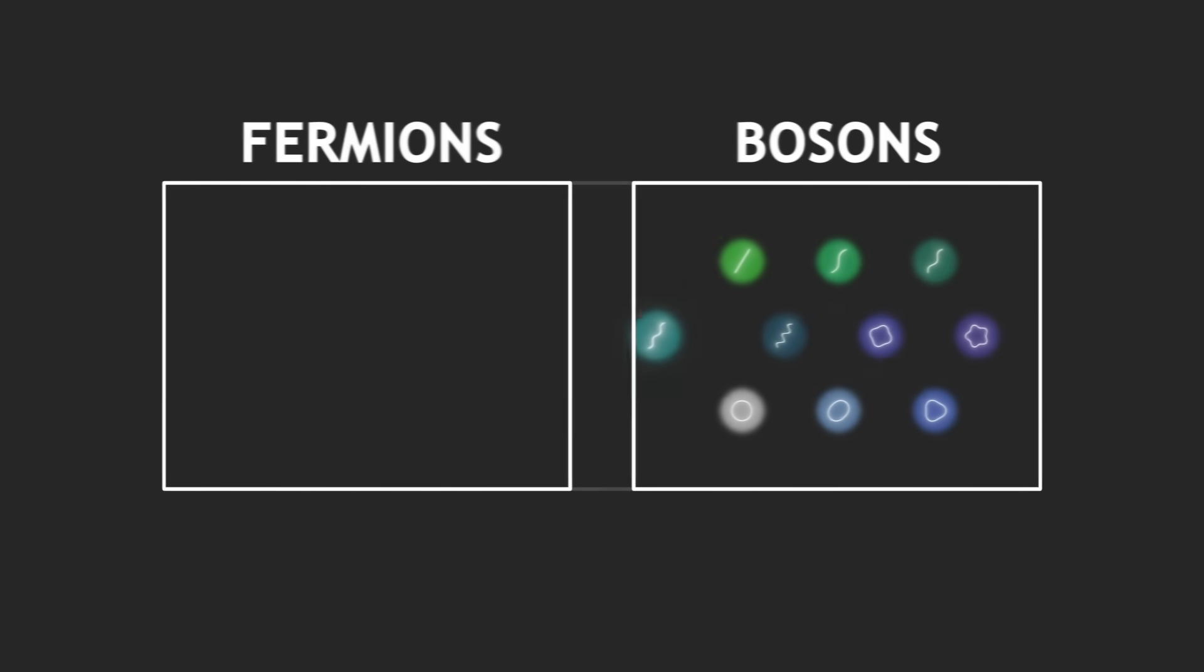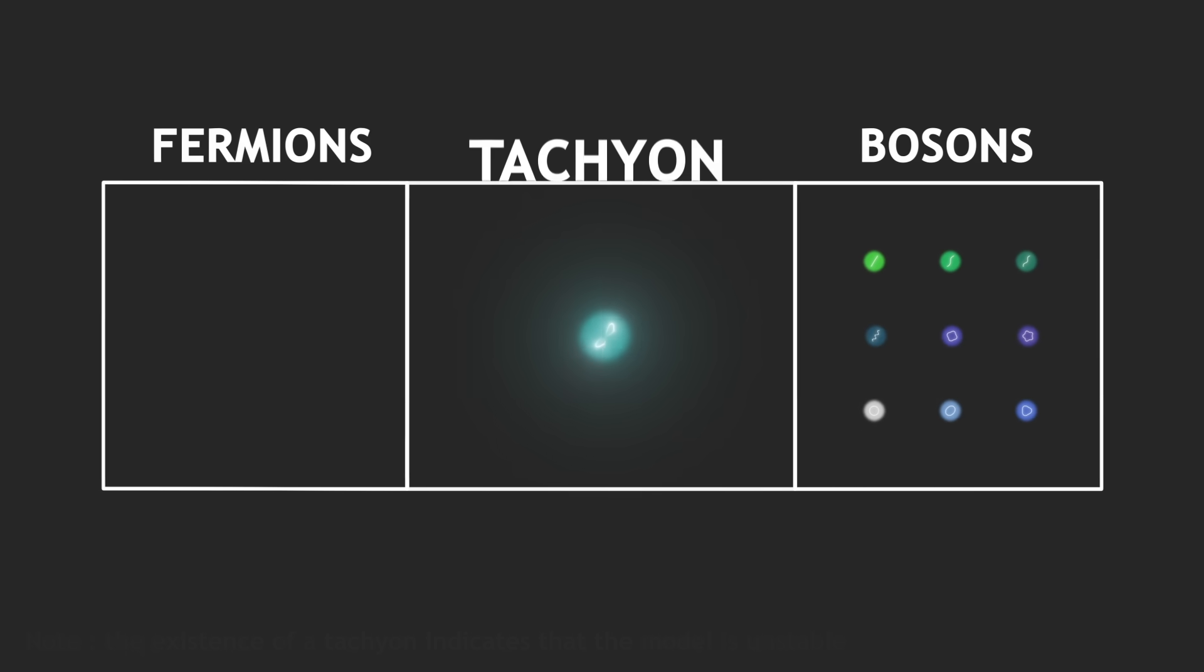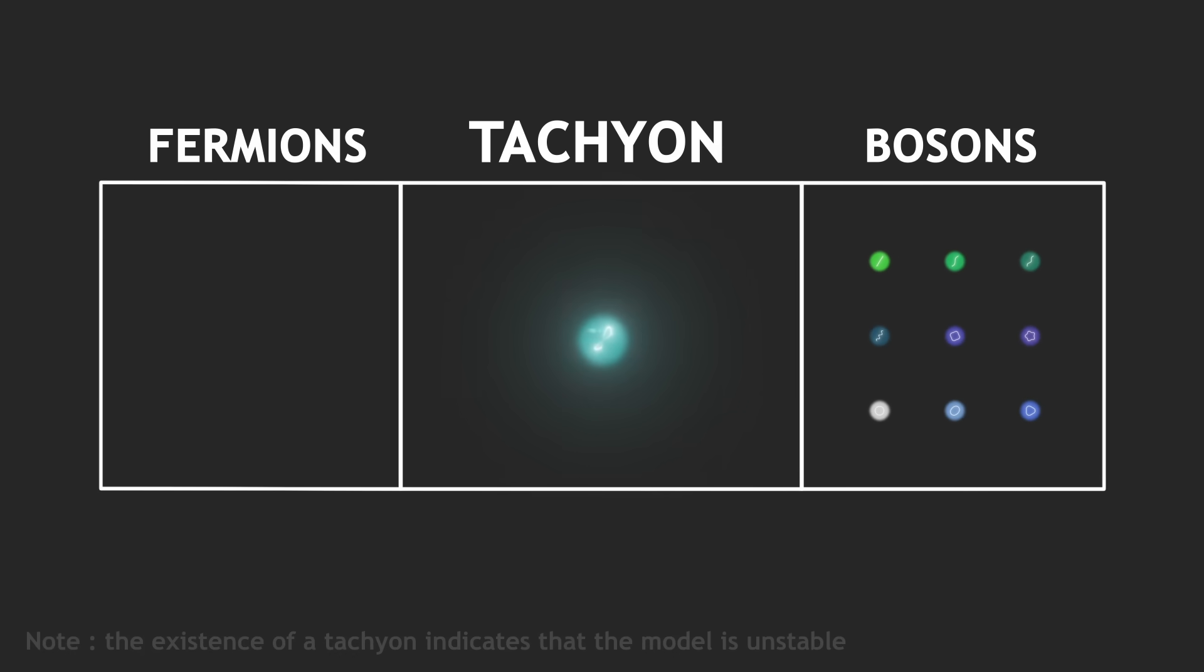Second problem: one of the particles predicted by the theory is what we call a tachyon. Its mass appears to be an imaginary number, the square root of a negative number. It is a mathematical problem that we must get rid of.